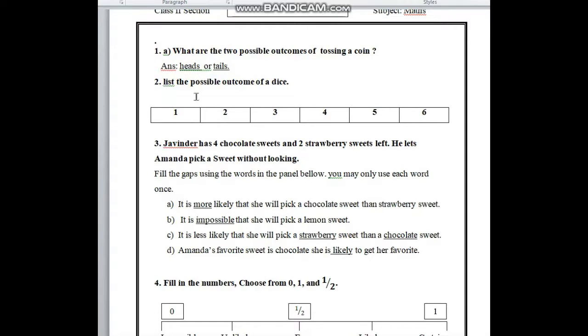In number 2, list the possible outcomes of a dice. Here we have to write 1 to 6 because we know a dice has 6 possible outcomes.